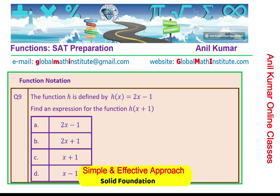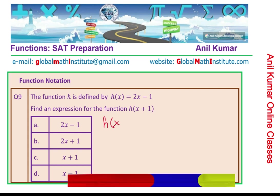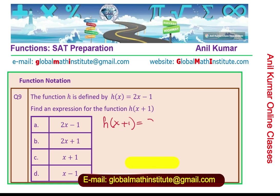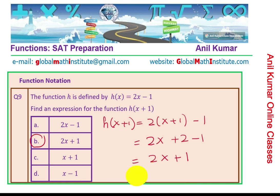Question number 9. The function h is defined by h of x equals 2x minus 1. Find the expression for h of x plus 1. To find h of x plus 1, replace x with x plus 1 and simplify: we get 2 times (x plus 1) minus 1, which is 2x plus 2 minus 1, equals 2x plus 1. That is option B.